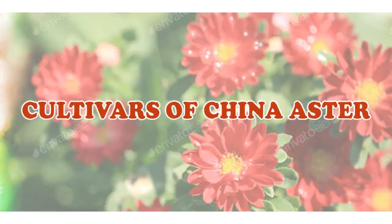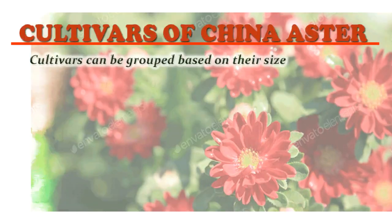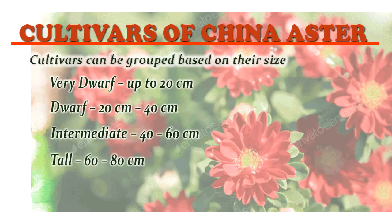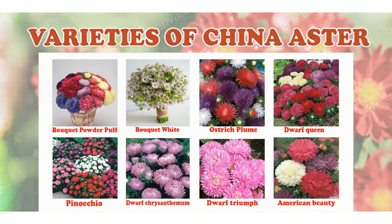Numerous cultivars are available for Aster. Cultivars can be grouped based on their size. They are varied dwarf, which are up to 20 cm; dwarf, which have a height from 20 cm to 40 cm; intermediate, which are 40 to 60 cm; and tall cultivars which are 60 to 80 cm in height.